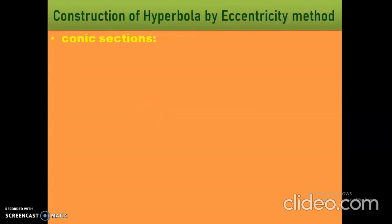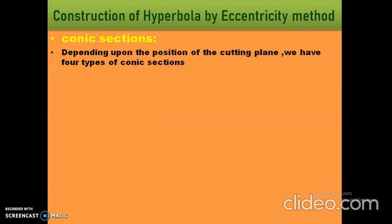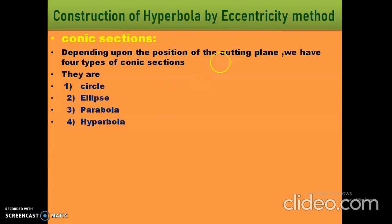How can we get the conic sections? We already discussed this in the last class. Depending upon the position of the cutting plane, we have four types of conic sections: circle, ellipse, parabola, and hyperbola.